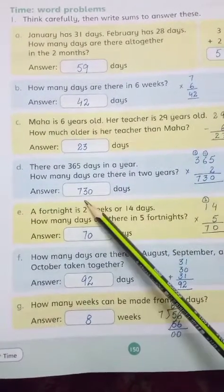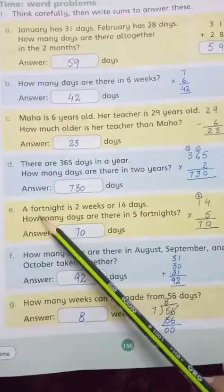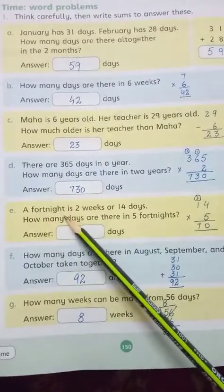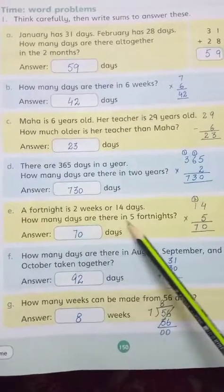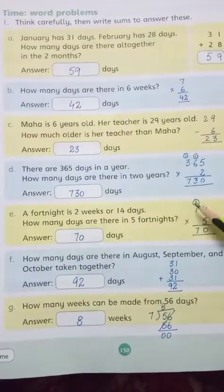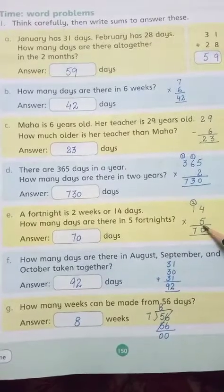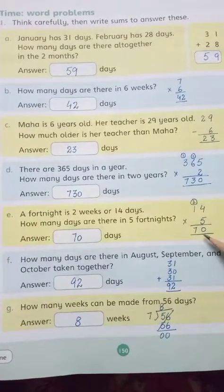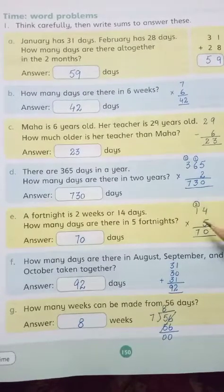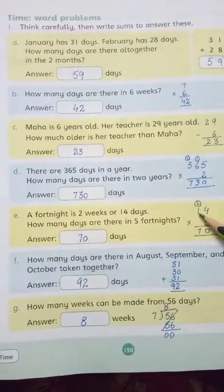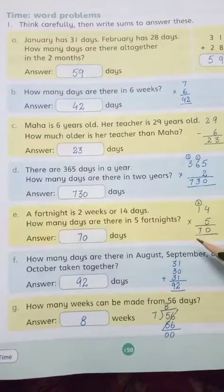Problem E: A fortnight is 2 weeks or 14 days. How many days are there in 5 fortnights? Fourteen multiplied by 5. Five fours are twenty, zero, two carry. Five ones are five, add two is seven. Answer is 70 days.